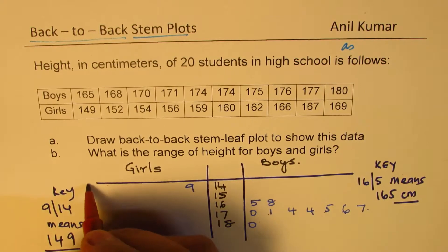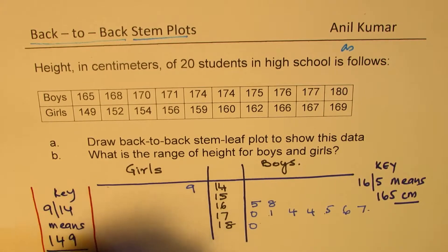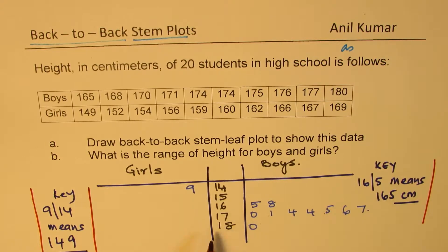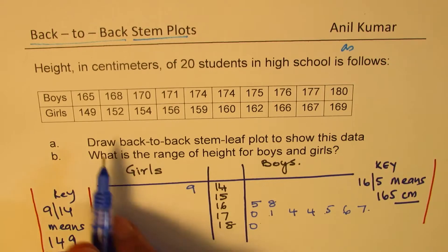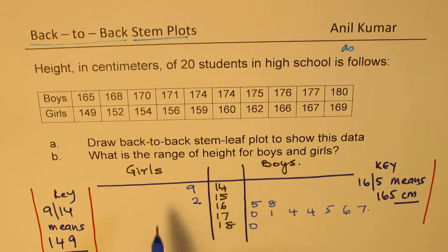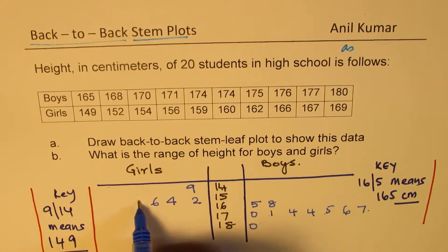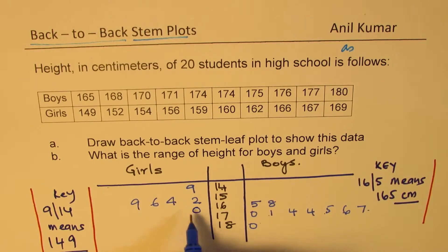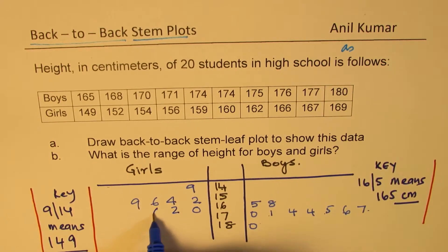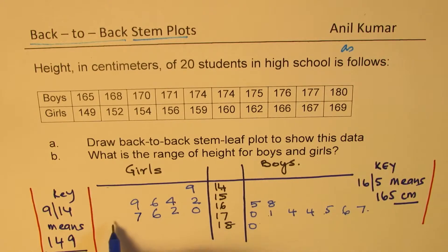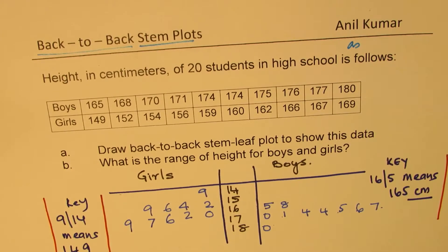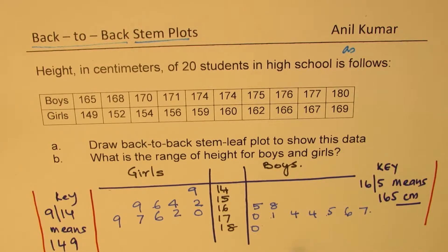It's important to clearly write what the key is, otherwise these numbers do not make much sense. Now for the girls' data: 152, 152, 154 — so 4 comes here — 156, then 159, then 160, 162, 166, 167, and 169. So we get all the information right there, and this is what you call a back-to-back STEM leaf plot.